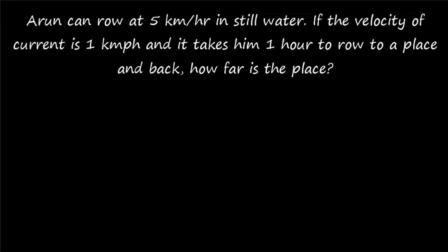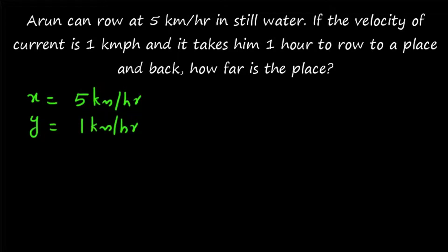Second question: Arun can row at 5 kilometers per hour in still water. If the velocity of the current is 1 kilometer per hour and it takes him 1 hour to row to a place and back, how far is the place? So x = 5 km/h (speed in still water), y = 1 km/h (speed of current), and t = 1 hour. We need to find the distance to the place.